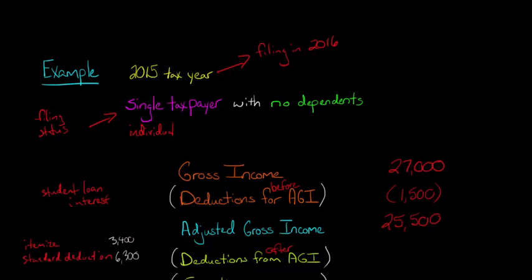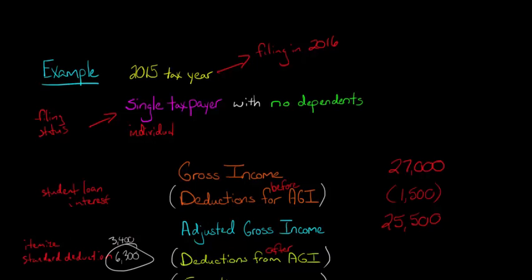Because the standard deduction of $6,300 is actually larger than the $3,400 you would get if you itemized, you're better off taking the standard deduction. You only get one of these two — you have to pick, and you'll obviously pick the larger one. So the deduction from AGI in this case is $6,300, because you're taking the standard deduction.